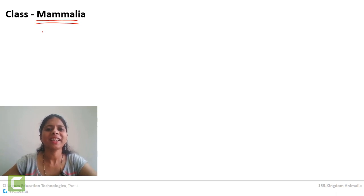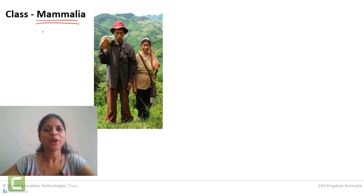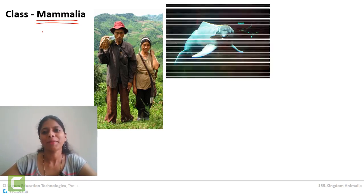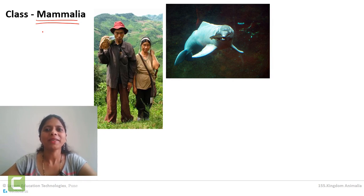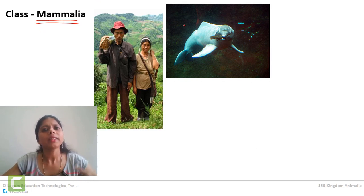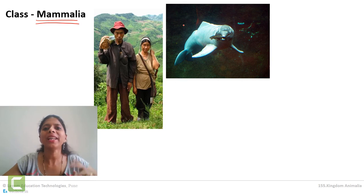Let us first consider a few examples of Class Mammalia to understand their characteristics. The first and very familiar example of mammals is nothing but human beings — all of us humans fall under Mammalia. Another example is dolphin. There are many mammals living in the water — aquatic mammals. Dolphin is an example of an aquatic mammal. The whale, the largest animal on earth, is also an aquatic mammal.